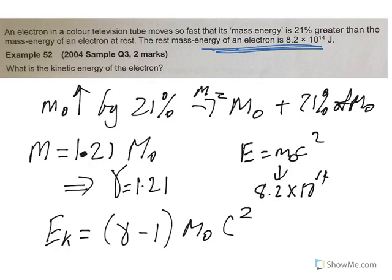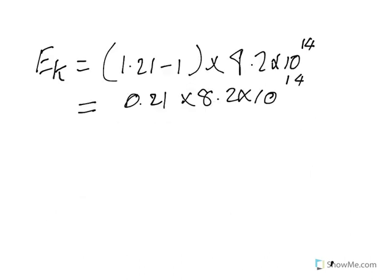Alright, so the kinetic energy of course was given by gamma minus 1 times M rest mass C squared. So we can use some of our information there, so the kinetic energy would be 1.21 minus 1 times 8.2 by 10 to the 14. And so the kinetic energy of that thing there that you would work out using that on your calculator. So that's 0.21 times 8.2 by 10 to the 14. So that works out to be 1.7 by 10 to the 14 joule.